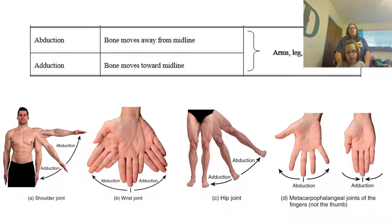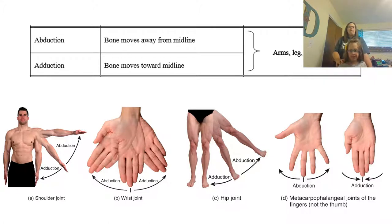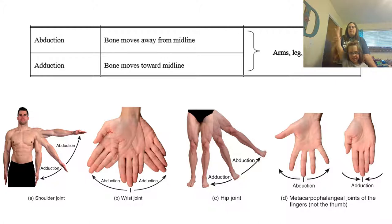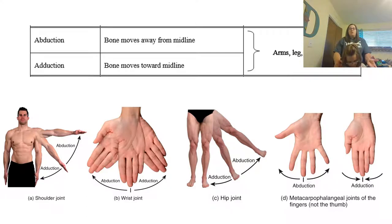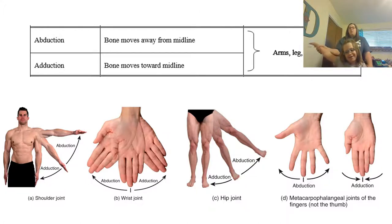The next ones we want to look at are called abduction and adduction. Abduction means you're moving away from your body — if your arm is at your side, you're going to raise it up away from your body. Same thing with the leg going out to the side. You can think of abduction as 'A boy dog' — what does a boy dog do when it needs to go to the bathroom? It lifts its leg up and puts it out to the side. That's abduction. The opposite, adduction, is where we pull it back towards our body, bringing it back down.